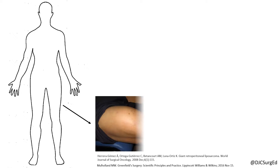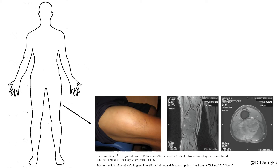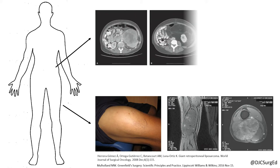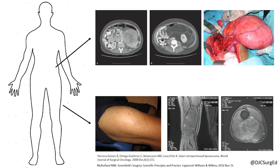Soft tissue sarcomas most commonly arise in the extremities in 40–50% of all cases, but can also be seen in the trunk or retroperitoneum, such as with this giant liposarcoma. Let's take a closer look at the management of extremity soft tissue sarcomas.